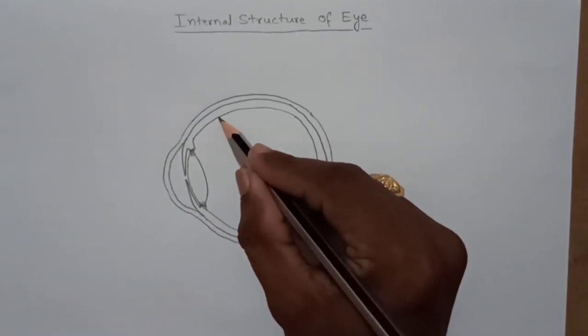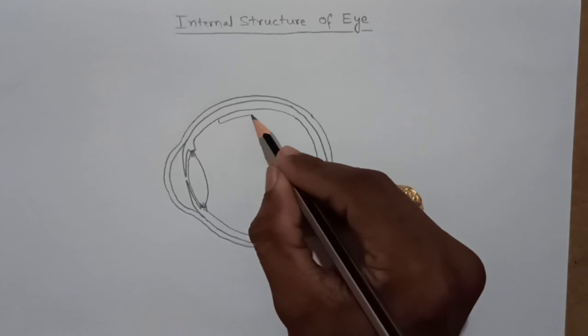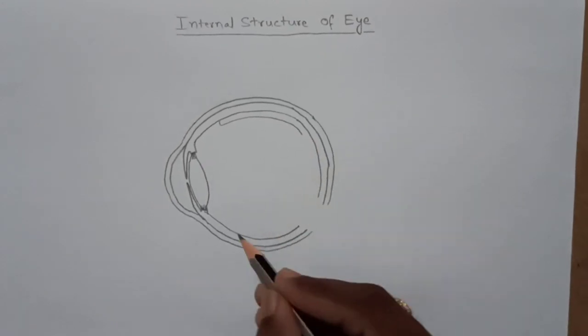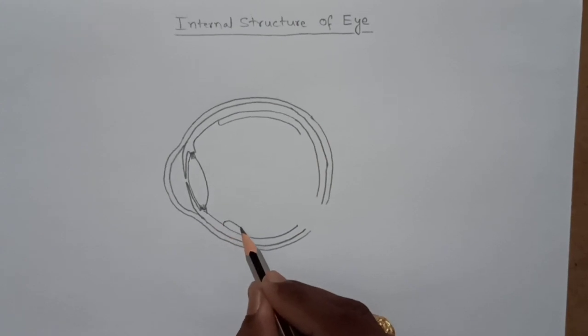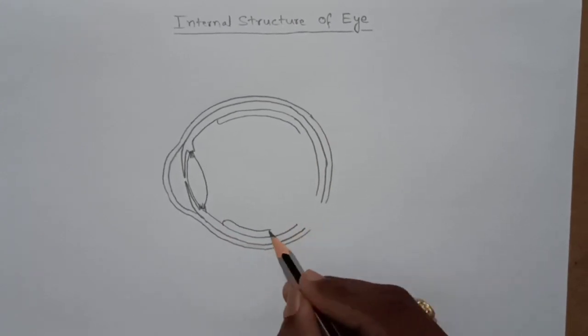And here third layer, actual sensory region of the eye, third layer is called retina, which is having the rods and cones.